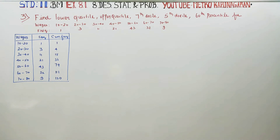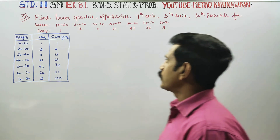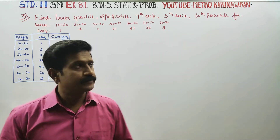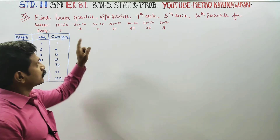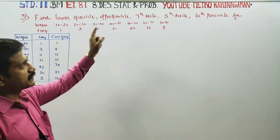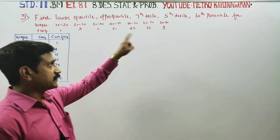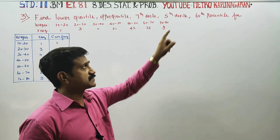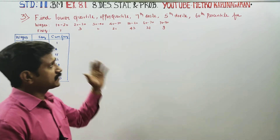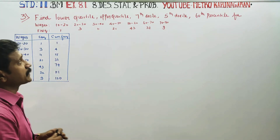Dear 11th Standard Business Maths students, I am Yattro Karanagaran. In exercise number 8.1, sum number 3, we need to find the lower quartile, upper quartile, 7th decile, 5th decile, and 60th percentile. The values are given inside.